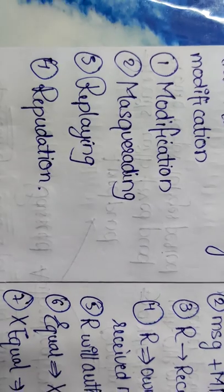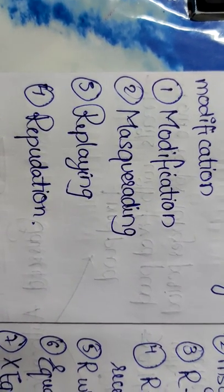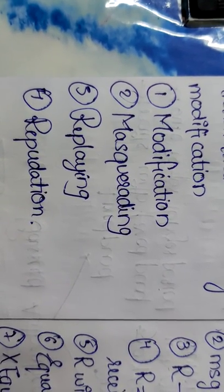These are the attacks that can be done on Integrity: Modification, Masquerading, Replaying, and Repetition. These four attacks were discussed earlier in Unit 1.